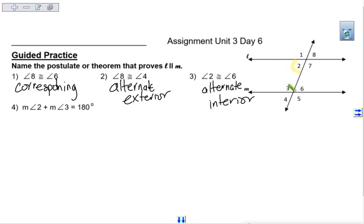And the next one, angle 2 and angle 3 add up to 180 degrees. Those are same side interior angles, the only one that's supplementary. Make sure you are typing out the whole word or using the appropriate abbreviations that we used in the notes.